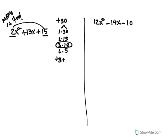And you should always check it and make sure you get your values. If I add them, I would get a positive 13. If I multiply them, I would get a positive 30.